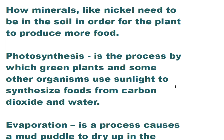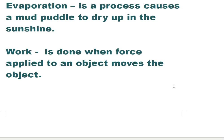Photosynthesis is the process by which green plants and some other organisms use sunlight to synthesize food from carbon dioxide and water. Evaporation is the process that causes a mud puddle to dry up in the sunshine. This one is easy — in the test you have a picture and you can just pick your answer right away.